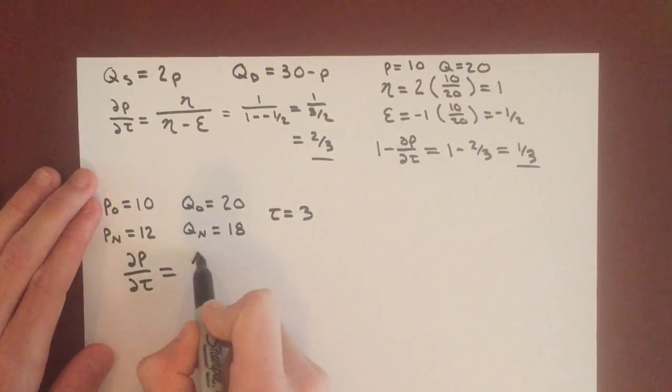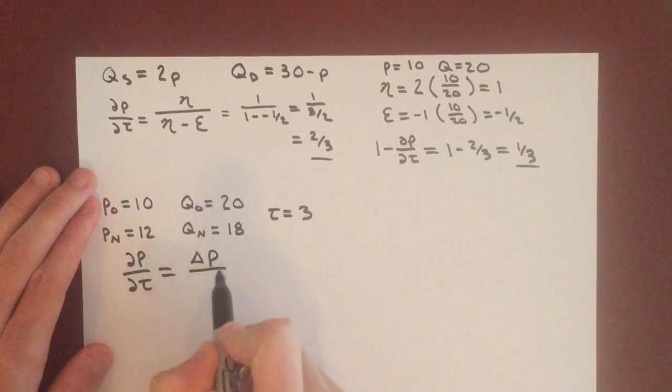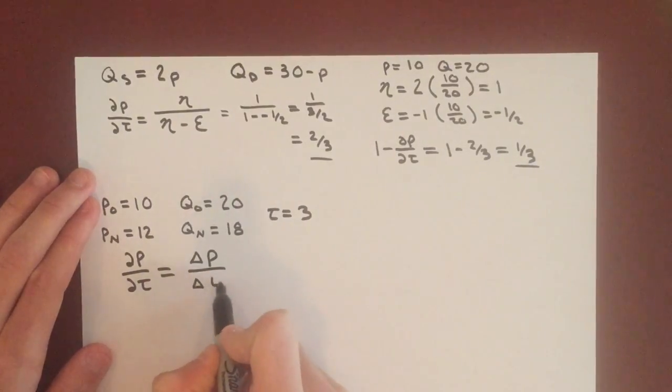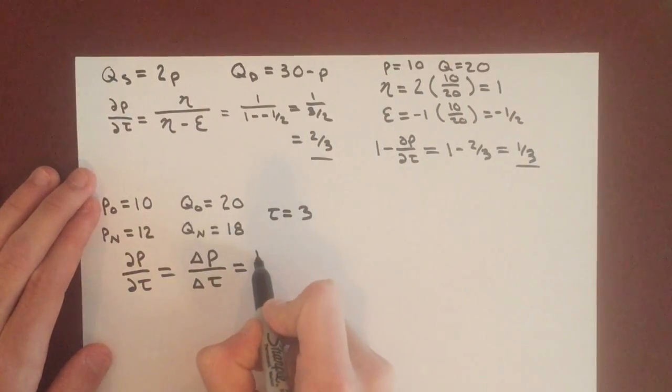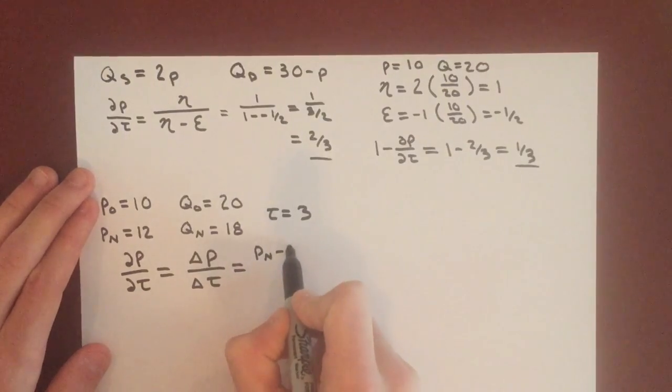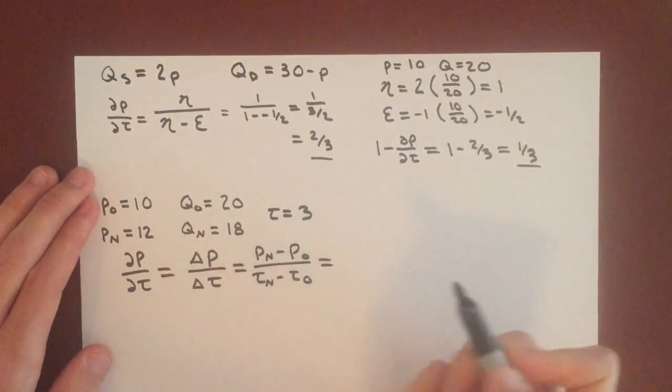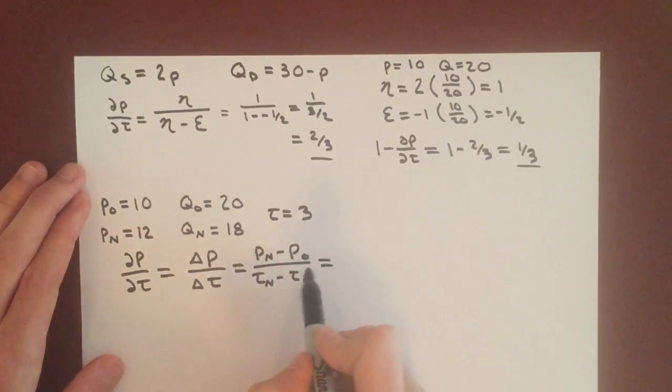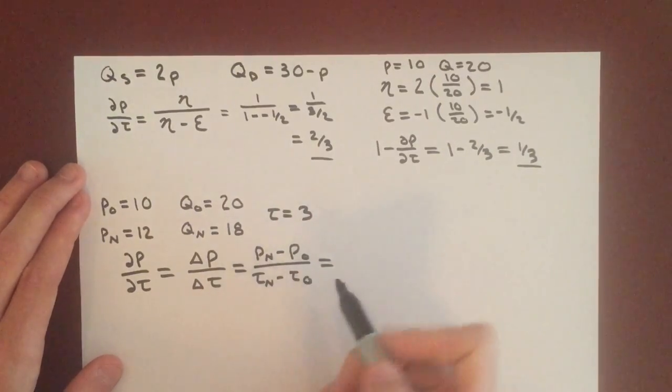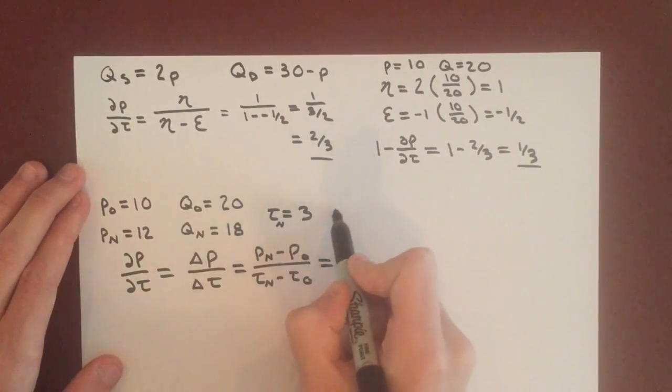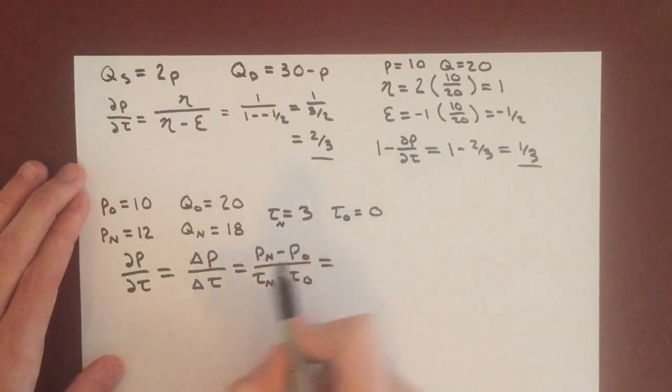We can do the same exact thing, except without using our calculus. The change in price is really just the price new minus price old, and the same thing for tax. We don't have a tax to start out with, so T old is just 0.